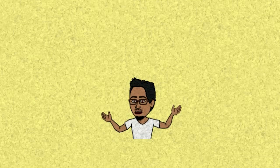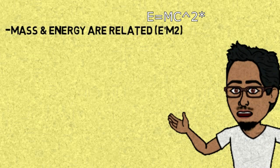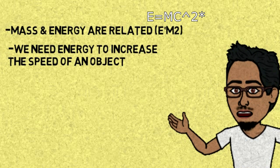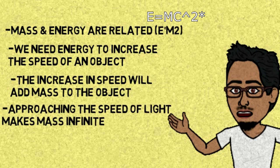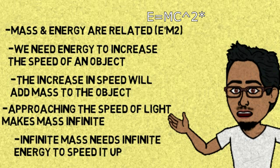An object can never reach the speed of light because by that time, what caused it to speed up will cause its mass to become infinite. Here it is really simply: mass and energy are related with E equals mc squared. To speed up an object, we need energy. Speeding the object up will add to its mass, which means we need more energy. To get to the speed of light, the mass would have become infinite — this means we need infinite energy, and that cannot be provided.